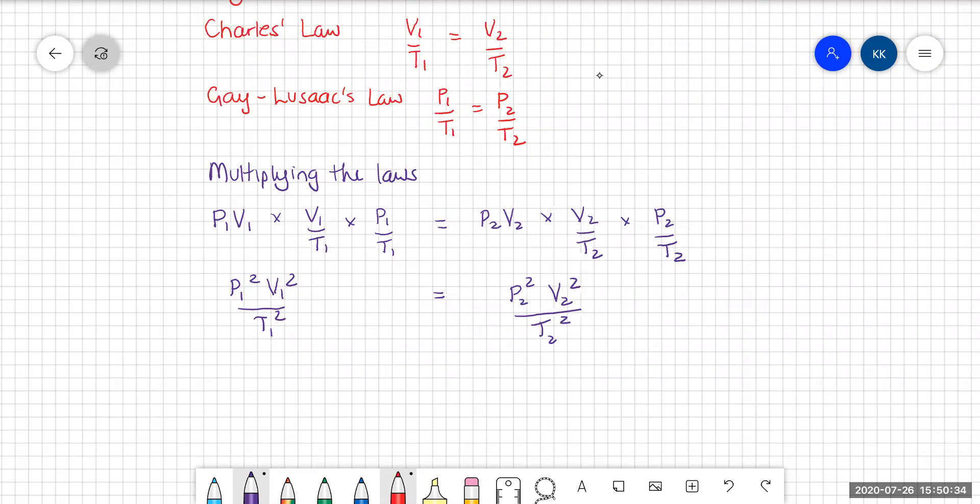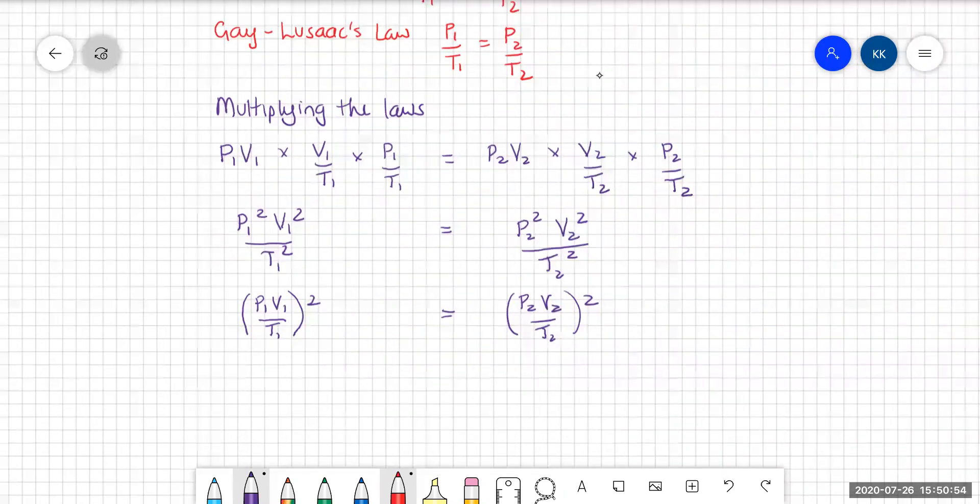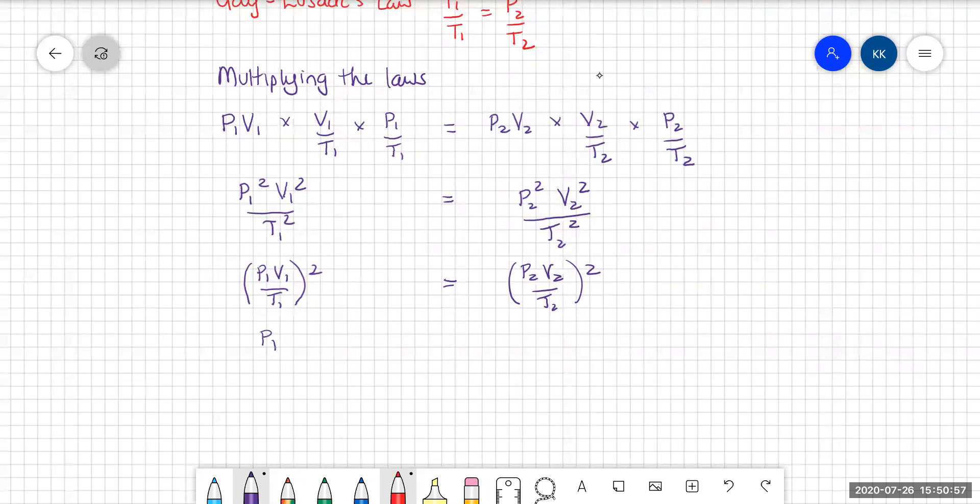So what we're actually looking at when we have P1 squared V1 squared over T1 squared is actually just P1V1 over T1 all squared. And that's equal to P2V2 over T2 all squared. And if we take the square root of both sides, we have P1V1 over T1 is equal to P2V2 over T2. And that is the combined gas law.